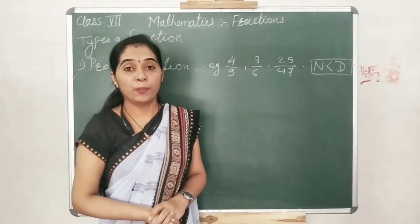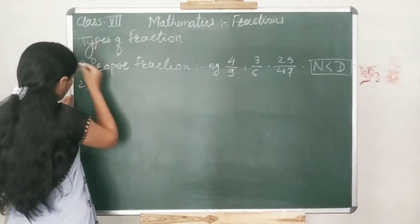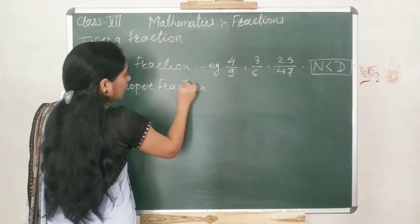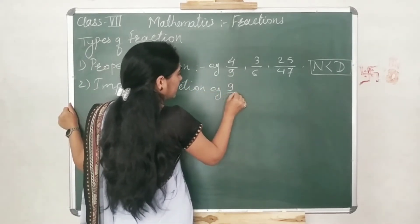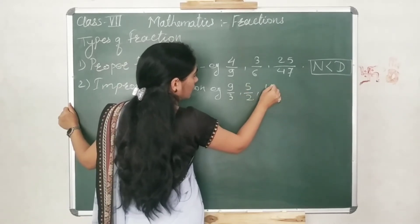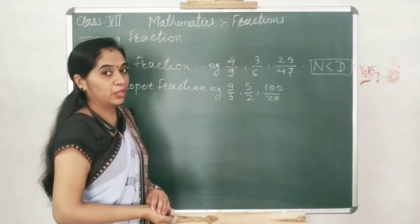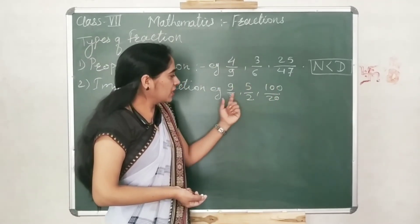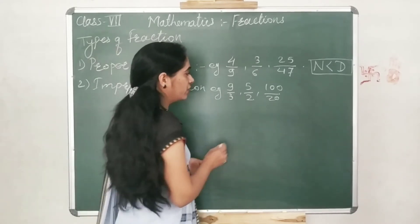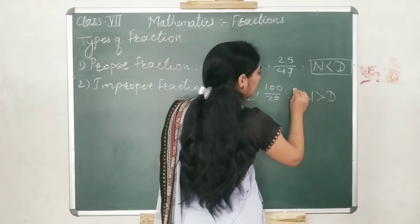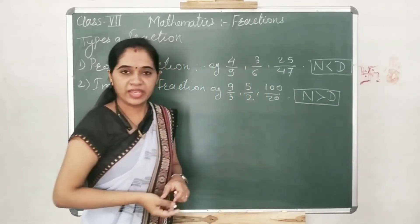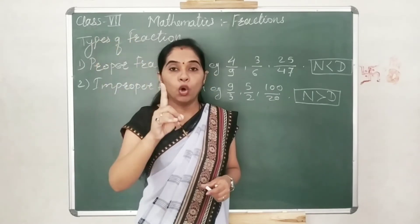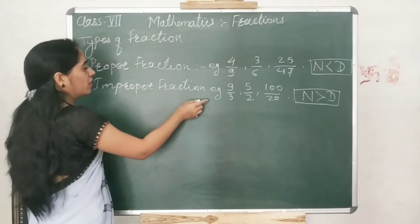The second type is improper fraction. For example: 9 upon 3, 5 upon 2, 100 upon 20. This fraction is the exact opposite of proper fraction. The numerator is always greater than the denominator. So, fractions in which the numerator is always greater than the denominator are called improper fractions.